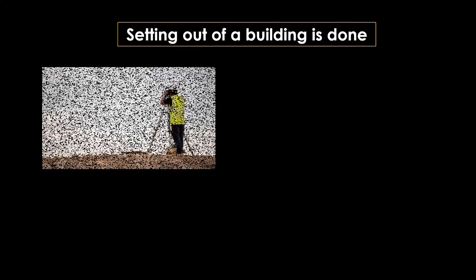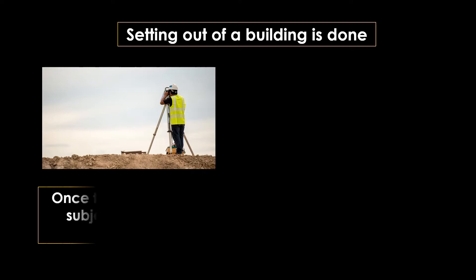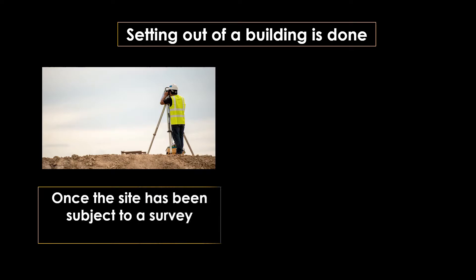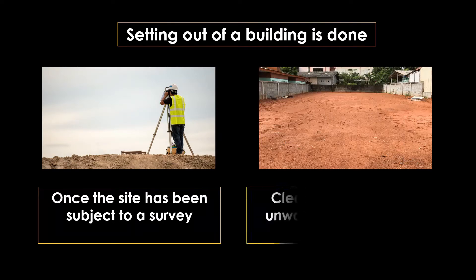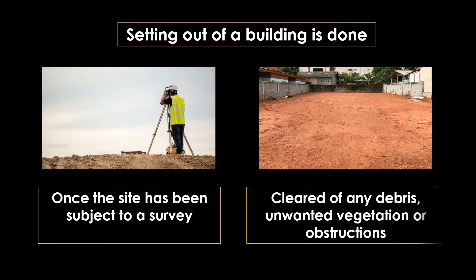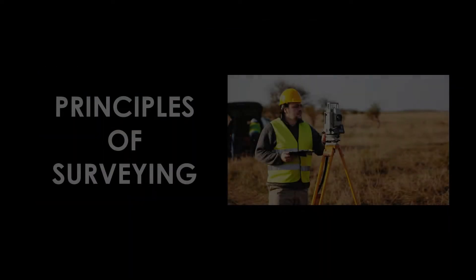Setting out is done once the site has been subjected to a survey and cleared of all debris, unwanted vegetation, and obstructions. With the help of survey, the points are located on the ground and we can start the setting out process.